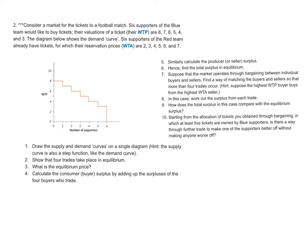Consider a market for tickets to a football match. That's known in the U.S. as a soccer match. Six supporters of the blue team would like to buy tickets. Their valuation of a ticket, their willingness to pay, are 8, 7, 6, 5, 4, 3. And we've got that diagrammed here.